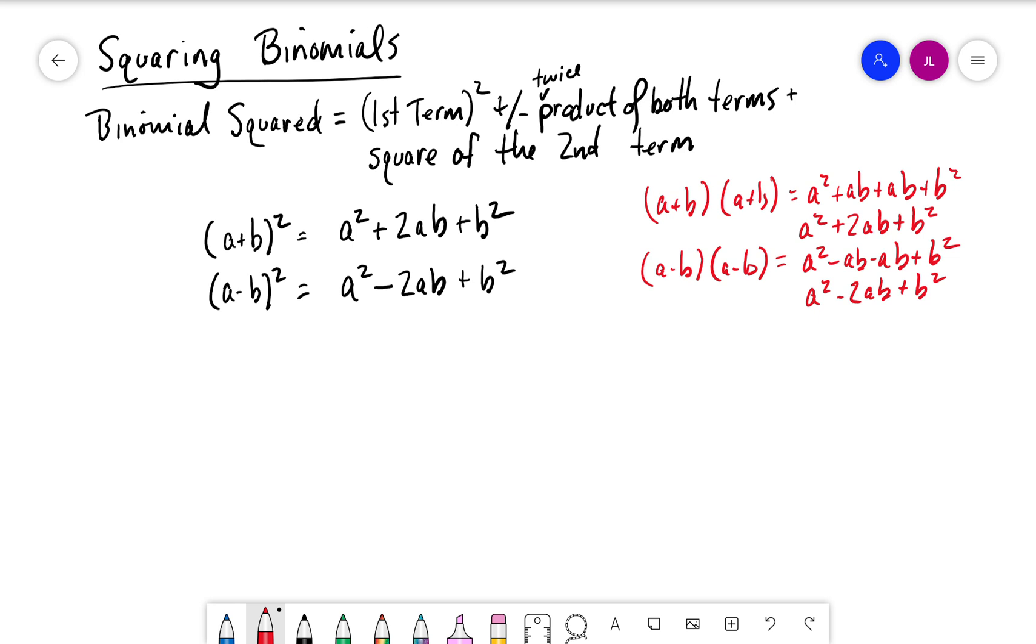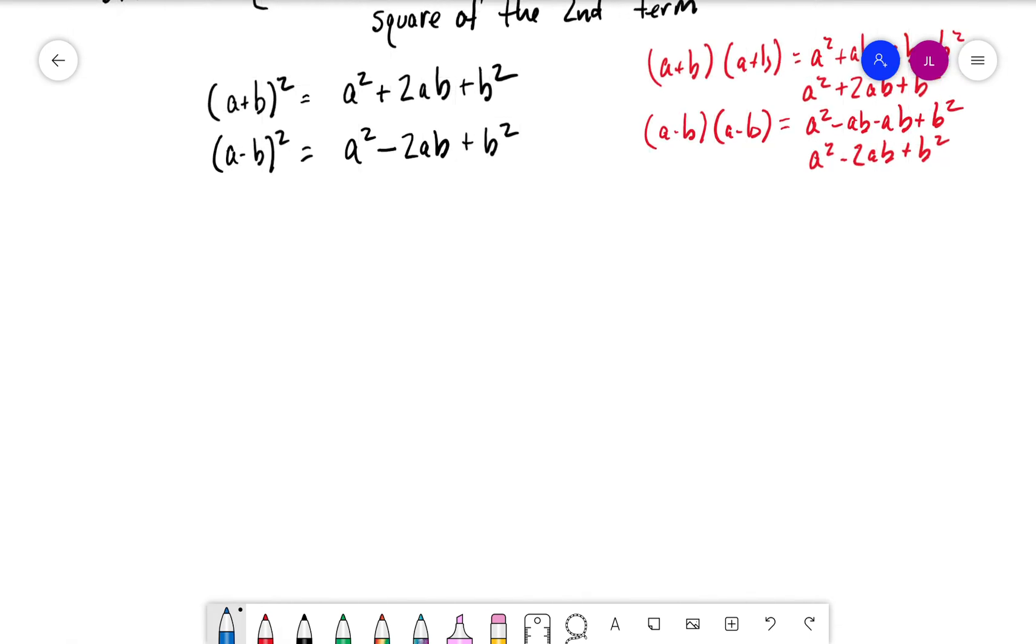it's a little easier and quicker for these types of things. So let's do a couple of practice problems. Let's say we have (x+2)². Remember, we're adding here. The first term squared is x², then we're looking at twice the product.